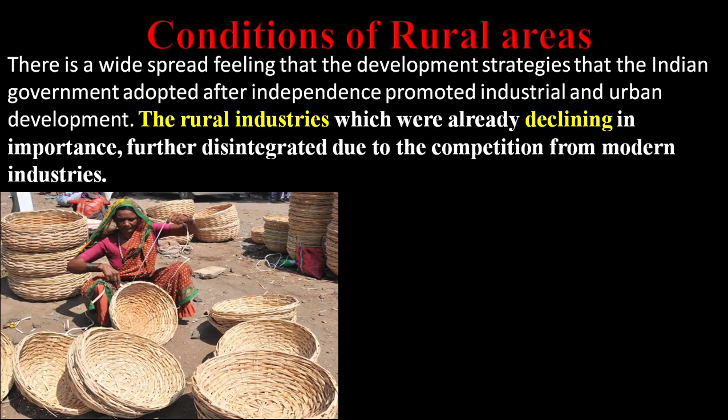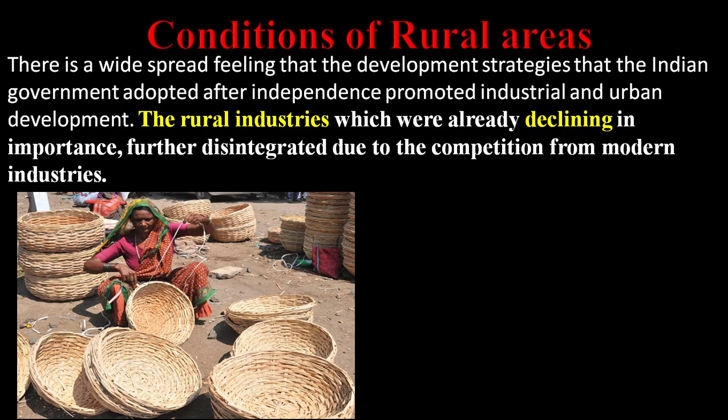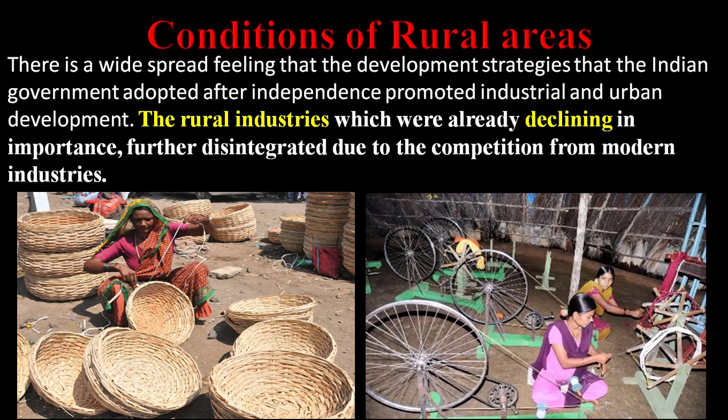There is a widespread feeling that the development strategies the Indian government adopted after independence promoted industrial and urban development. Rural industries, which were already declining in importance, further disintegrated due to competition from modern industries. Cottage industries and small-scale industries concentrated in rural areas were completely declining because they were unable to compete with modern industries.